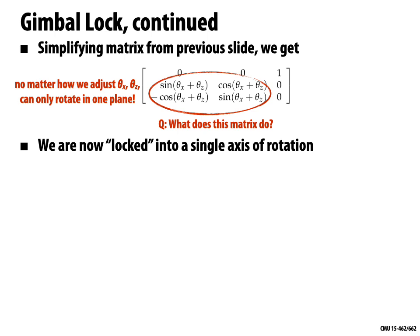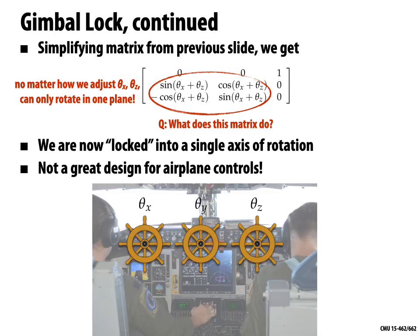At some point in your life you may encounter this phenomenon when using a piece of 3D software — you're trying to rotate the camera and things get stuck; you can't make any progress. So if Euler angles are not so great, what are the alternatives? There is a general expression for a matrix that performs a rotation around a given axis U by an angle θ. If you have the three components ux, uy, uz, and the angle θ, you have a matrix — you plug it into your code and that gives you the rotation you want.